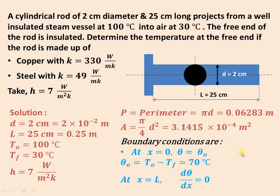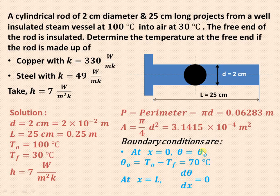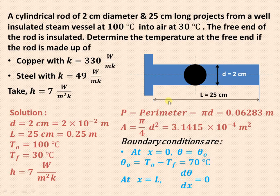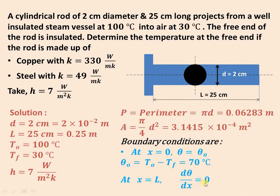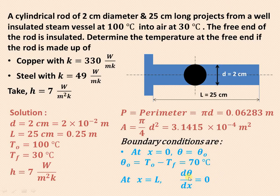The boundary conditions are: at x = 0, θ = θ₀, meaning the temperature difference equals the base temperature difference, which is 100 − 30 = 70°C. At the insulated end, x = L = 0.25 m, the gradient is zero, so dθ/dx = 0. These two boundary conditions will be used while solving the differential equations using the MATLAB code.